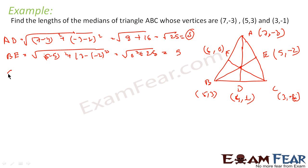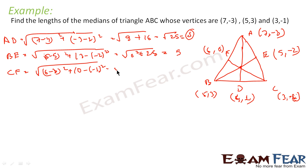Similarly, CF = √((3-6)² + (-1-0)²) = √(9 + 1) = √10. So we have all three medians: AD = 5, BE = 5, and CF = √10. We found the midpoints and then used the distance formula to find all three medians.